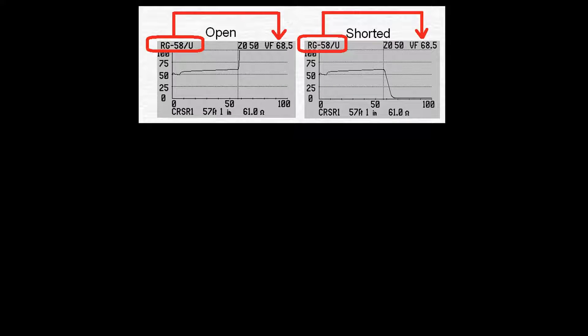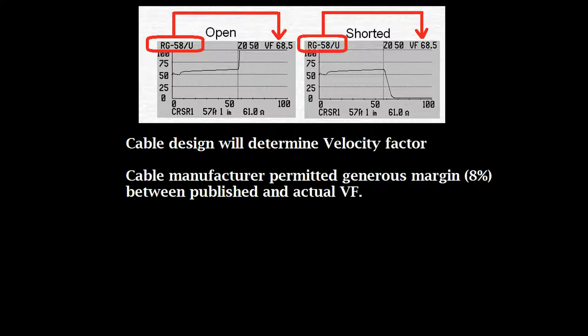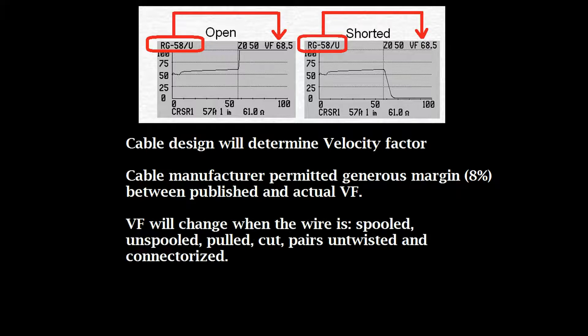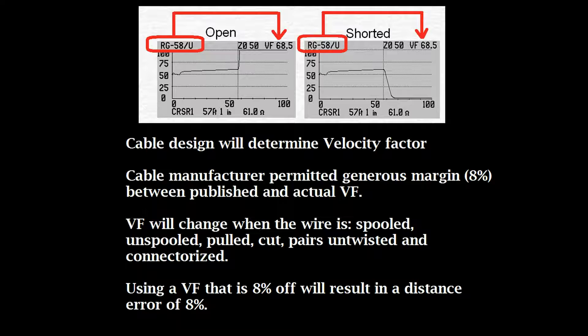Keep in mind, the easiest way is not necessarily the best way. Here's why. Velocity factor is determined by the design and the building of the cable. Cable manufacturers are permitted a generous margin between the published and actual velocity factor. Once the cable is built, simply handling the cable can change the velocity factor. So any error shown in the entered velocity factor will directly show up in your distance readings.